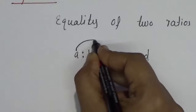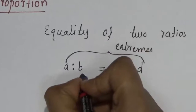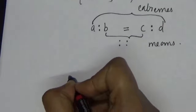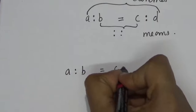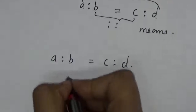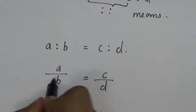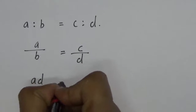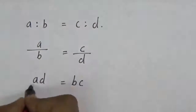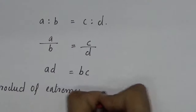The first and fourth quantities — that is A and D — are called extremes. The second and third quantities are called means. So if A is to B is equal to C is to D, then A, B, C, and D are in proportion. We can write this as A by B equal to C by D — equal fractions — and cross multiply to get A times D equals B times C. So the product of extremes equals the product of means.